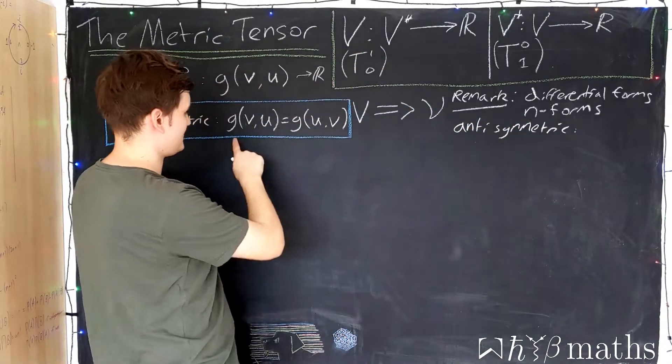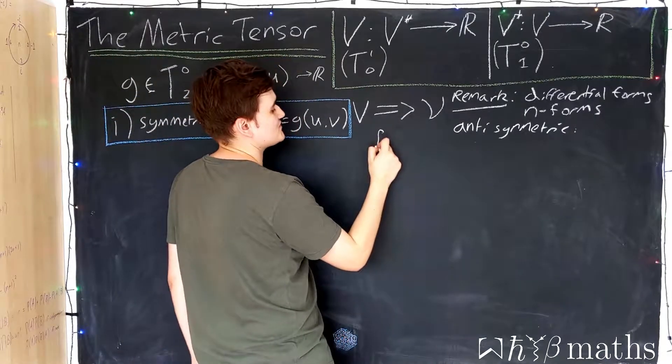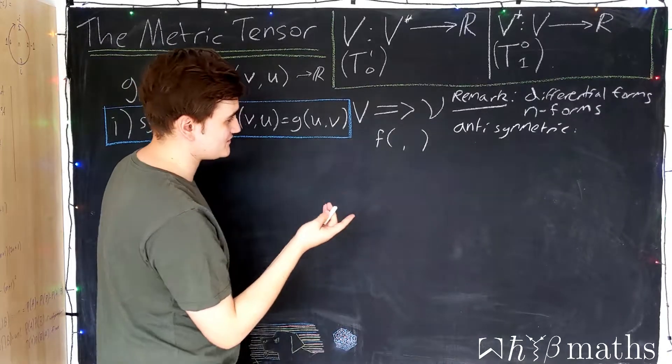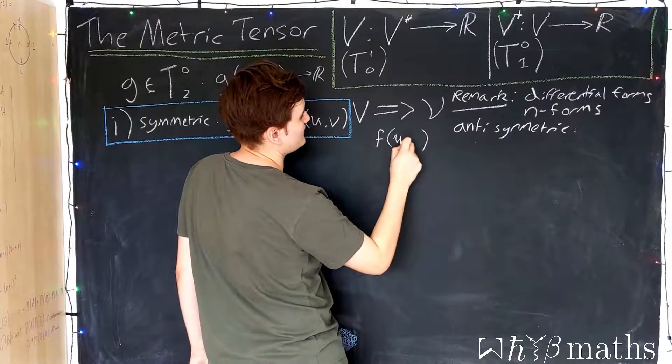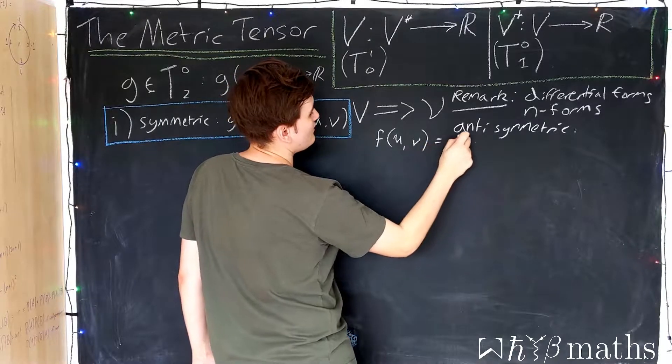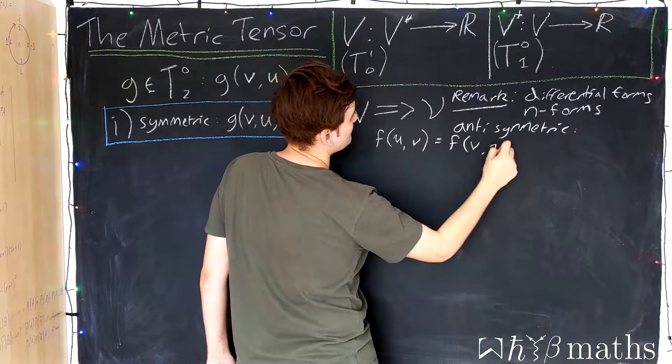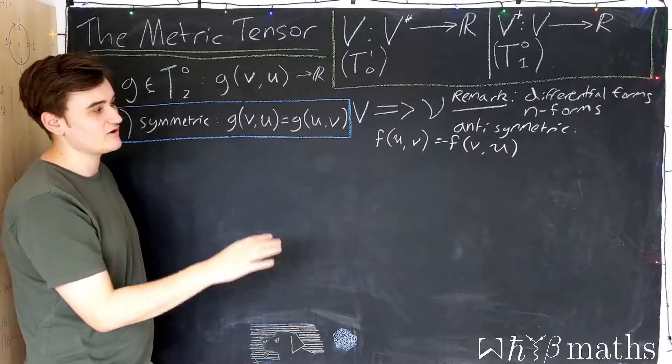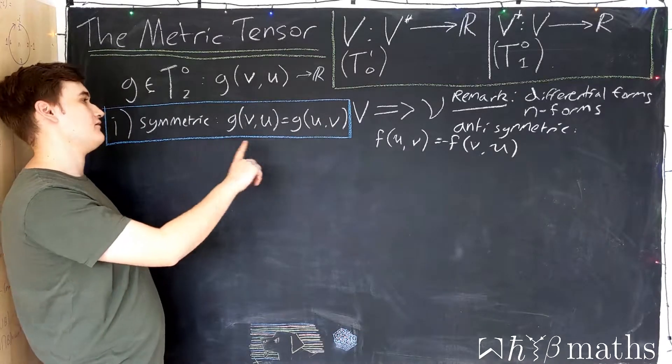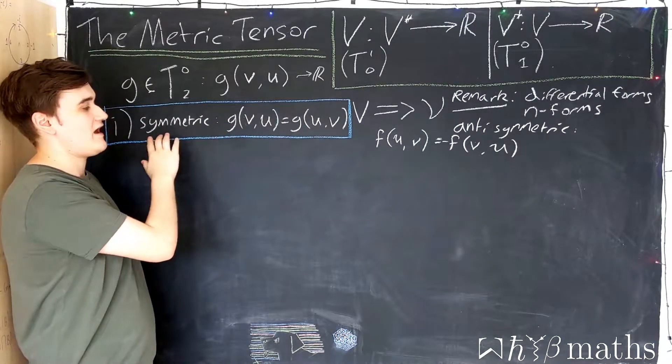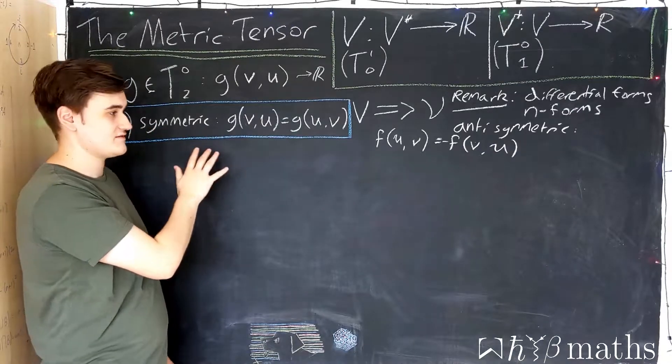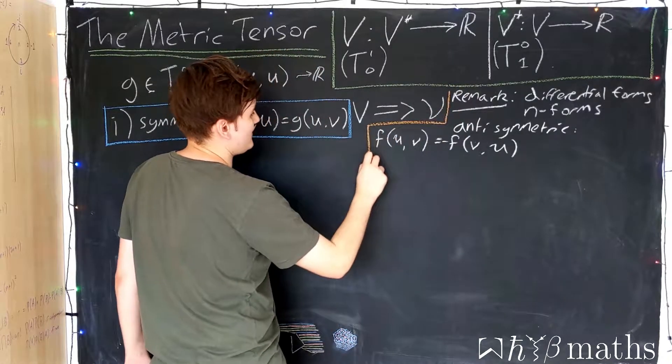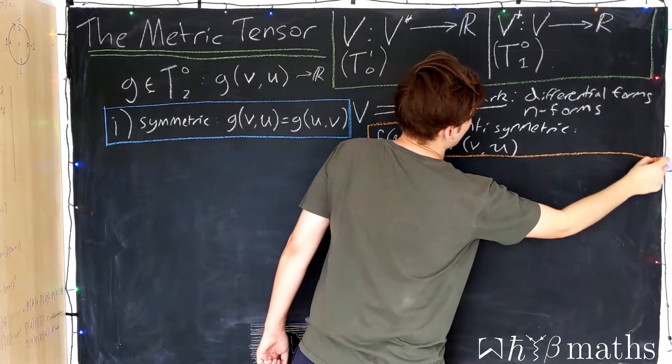So if we have, say, a two-form, which is just an object that wants to eat two vectors, to be anti-symmetric just means that when you swap the arguments around, you pick up a minus sign. So to be completely clear, we're not talking about differential forms, we're just talking about (0,2) tensors for now, and the metric is a symmetric (0,2) tensor, whereas a differential form is an anti-symmetric (0,N) tensor.